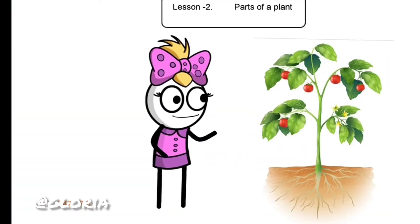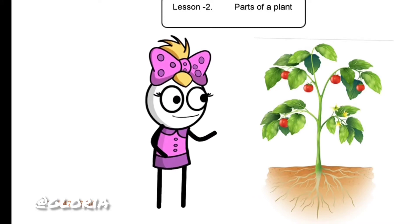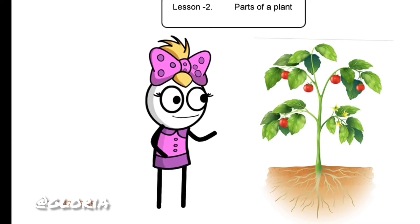Look at a plant. Do you know the name of this plant? Yes, it is a tomato plant. We have just learnt that plants have two main parts. They are root and shoot.